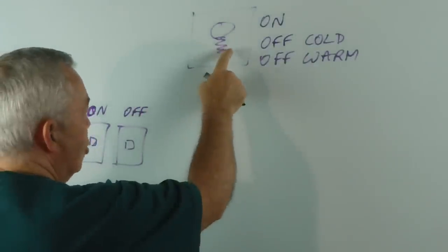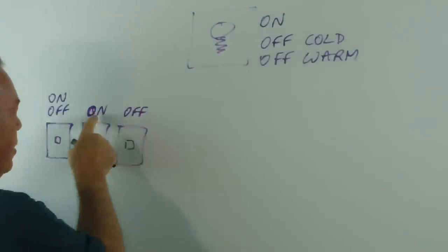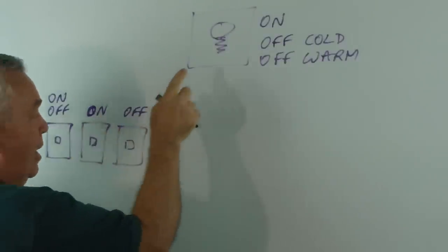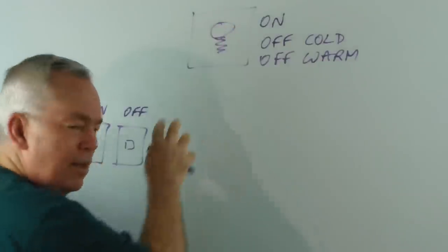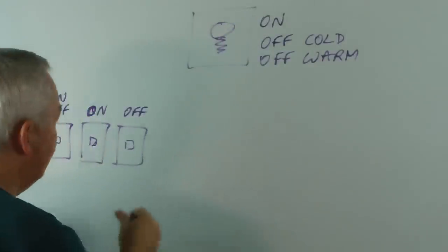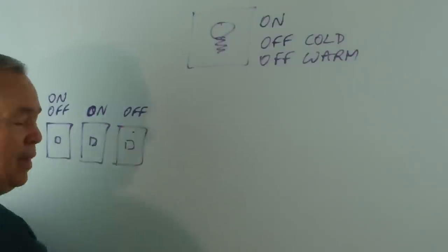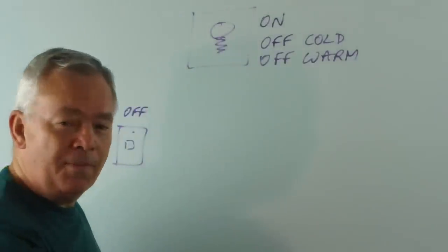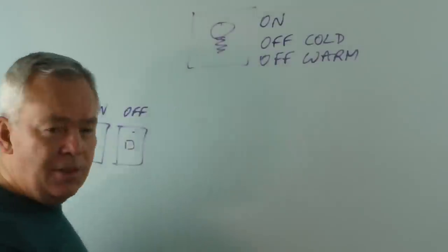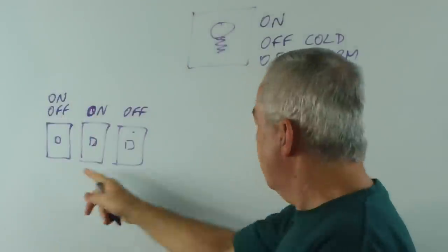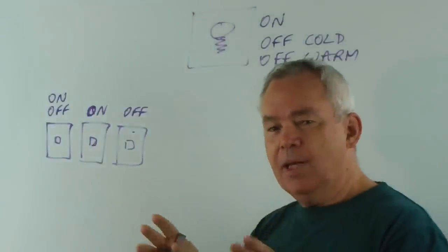Now if the light is shining, we know it's the switch that we just turned on, because these other ones are both off. If I touch the globe and it's cold, I know that it was never turned on in the first place, and that's this switch. But if I touch the globe and it's warm, I know it was the first switch, because I turned it on to warm it up and then turned it off. So I now have three states. Three switches and three states, I can match them up. And this is a mathematical principle.